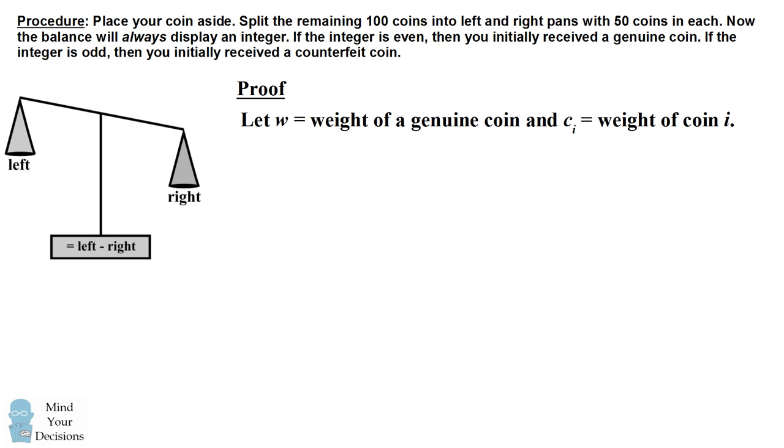Let w equal the weight of a genuine coin, and let c sub i equal the weight of coin i. We'll number the coins in the left pan from 1 to 50, and we'll number the coins in the right pan from 51 to 100.